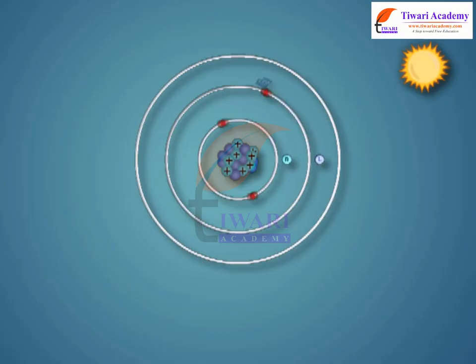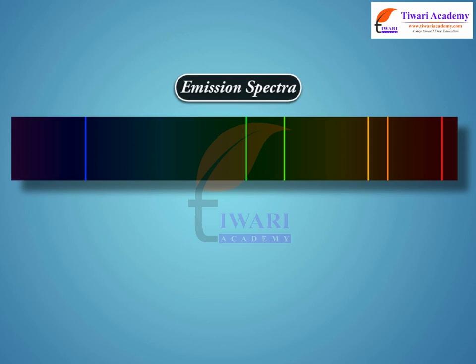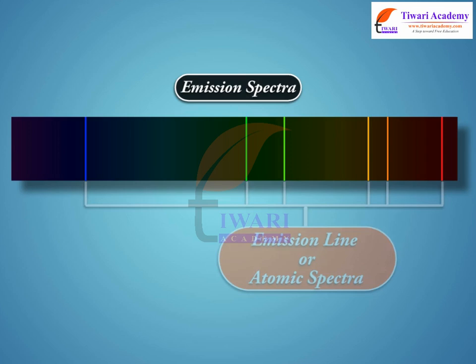Atomic spectra. When atoms are excited, they emit radiation of certain wavelengths, which correspond to different colors. The emitted radiation can be observed as a series of lines with dark spaces in between. This series of spectral lines is called an emission line spectrum, or atomic spectra.